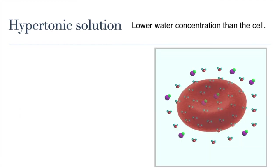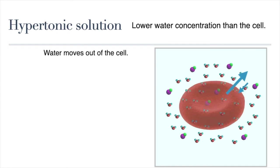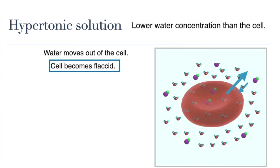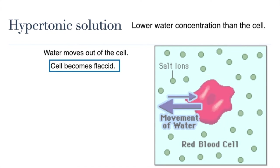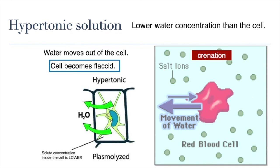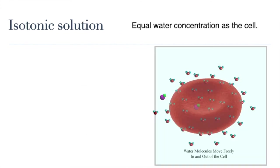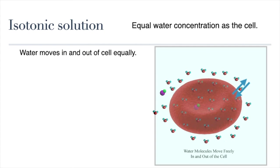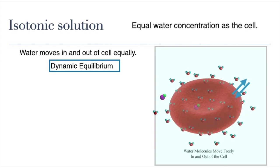The opposite to a hypotonic solution is a hypertonic solution. If we place a cell in an environment with hypertonic conditions — that is, one in which there is less water concentration than the cell, for example a cup of salty water — then water will move out of the cell. The cell will shrink and become flaccid. When a red blood cell loses water and becomes flaccid, it is called crenation. When a plant cell becomes flaccid, it is called plasmolysis. On the other hand, if we place a cell in an environment with isotonic conditions — one in which there is equal water concentration as the cell — the cell will be unaffected. Water will move in and out of the cell at the same rate, and there will be dynamic equilibrium.